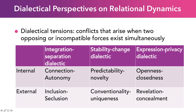The third dialectic is expression and privacy: how open are you, or how much do you keep to yourself? Within the relationship, in a romantic context, this might be how much you talk about past romantic relationships versus how closed you are. The external version is how much you tell your family and friends about what you and your partner do — do you reveal or do you conceal? Remember, at any point in a relationship these dialectical tensions can be happening. They're not bad; it's just what happens.